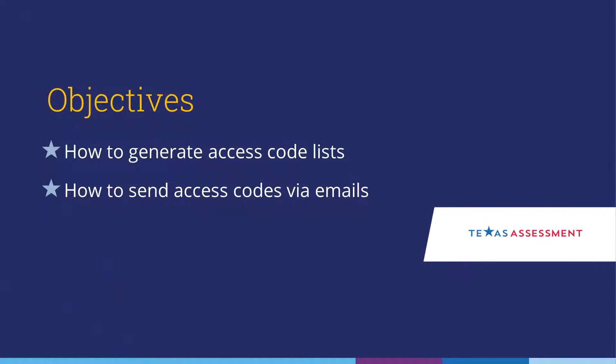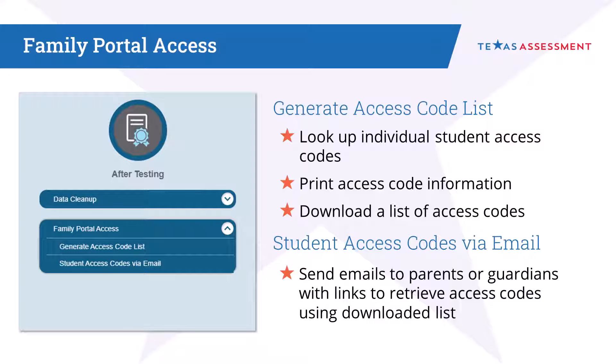In this training, we will review How to Look Up and Generate Family Portal Access Code Lists and How to Send E-Mails to Parents and Guardians with Links to Retrieve Family Portal Access Codes. TIDE users with specific permission may generate a report of access codes for their campus or district through the Generate Access Code List option in the Family Portal Access Codes panel under the After Testing section in TIDE. As part of notifying students and families of test results, users can send e-mails to parents or guardians with links to retrieve access codes.